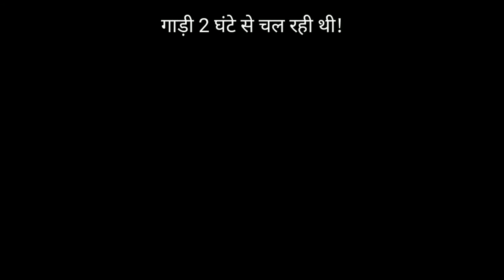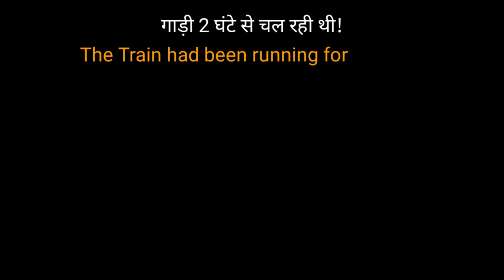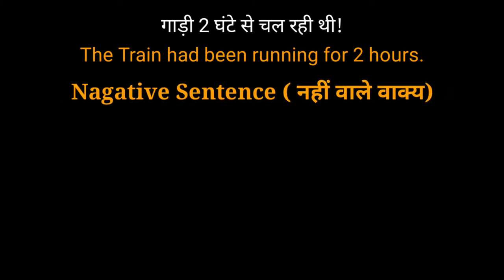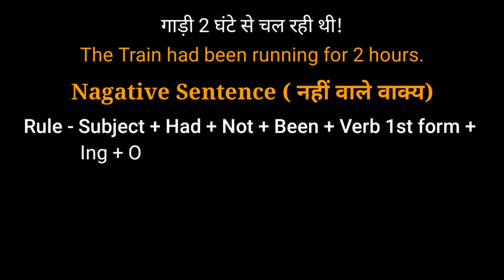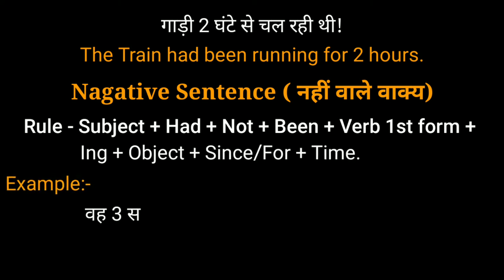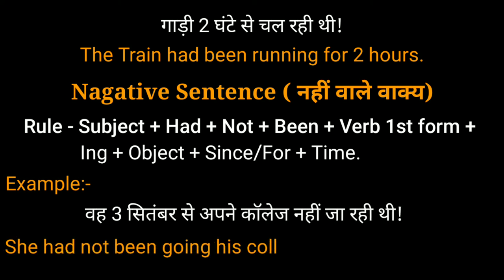Second example: गाड़ी दो घंटे से चल रही थी — The train had been running for two hours. इसमें The train subject है, had been helping verb है, running verb की first form + ing है. घंटे से के लिए for का प्रयोग किया गया है और दो घंटे अर्थात two hours time है. Next are negative sentences — नहीं वाले वाक्य. Formula: Subject + had + not + been + verb (first form + ing) + object + since/for + time.